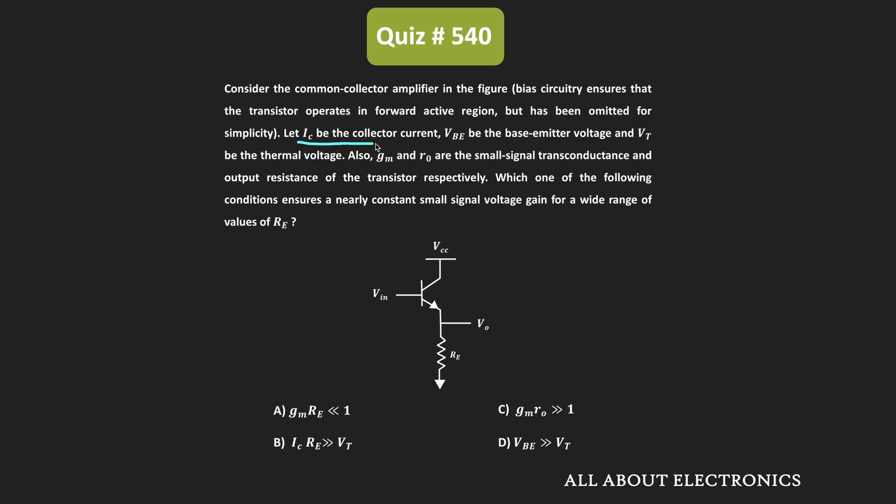Here, IC is the DC collector current. Similarly, VB is the base-emitter voltage of the transistor. VT is the thermal voltage. Similarly, GM is the transconductance and R0 is the output resistance.